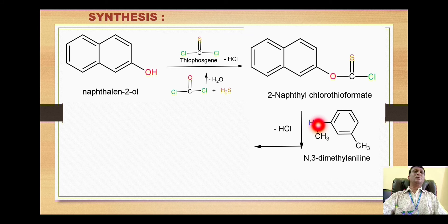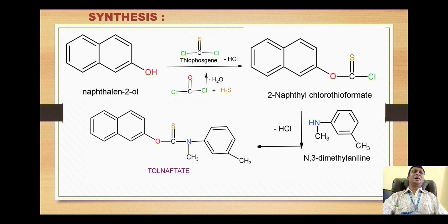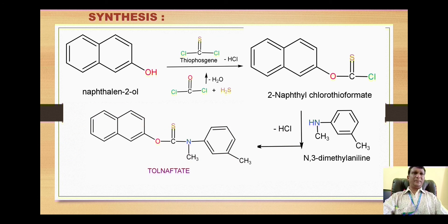This N,3-dimethylaniline reacts with the chlorothioformate ester. The amino group, acting as a nucleophile, attacks on the carbon to substitute the chlorine. The hydrogen and chlorine are liberated as hydrogen chloride, and the aniline derivative is added on that carbon to give our titled compound tolnaftate. The chlorine is substituted with the aniline derivative, resulting in formation of tolnaftate. Thanks for watching the video, please like and subscribe.